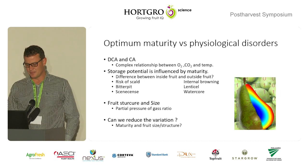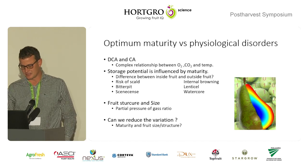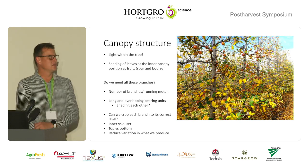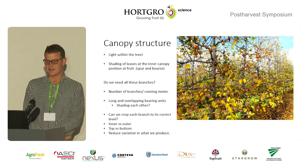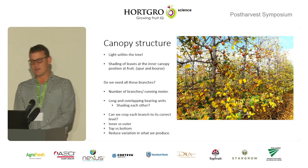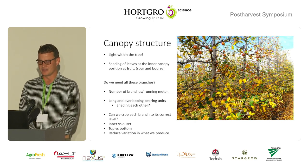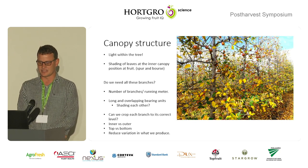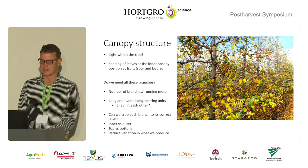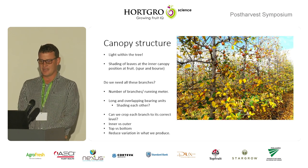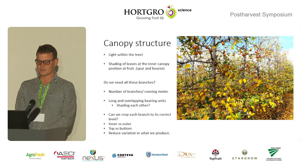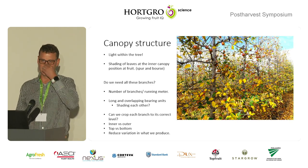But that wasn't my main concern. My main concern was what we are producing. Coming back to the variation that we create — the first thing I want to show is we need to go back to: if we want to reduce the variation of what we produce, we have to start at the canopy structure. Before we look at the variation in an orchard, let's just look at what we produce on each tree.